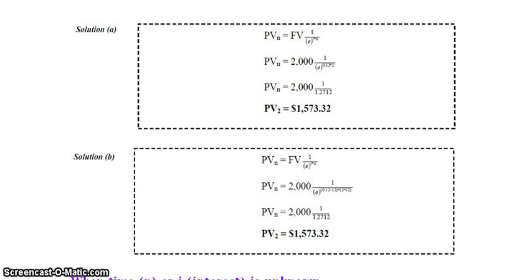Now we will discuss the monthly (intra-yearly) case. PV(n) = Future Value × (1 / e^((i/m)×(n×m))). Substituting the values: PV(n) = 2000 × (1 / e^((0.12/12) × (2×12))). Simplifying, this gives 2000 × (1 / 1.2712).